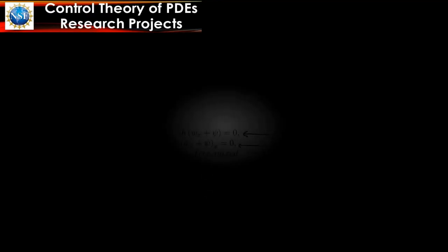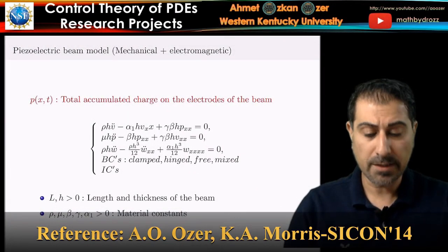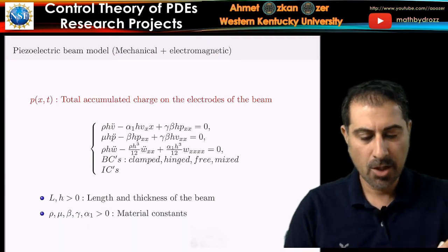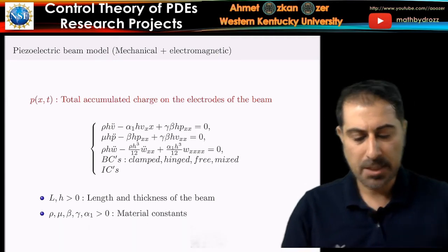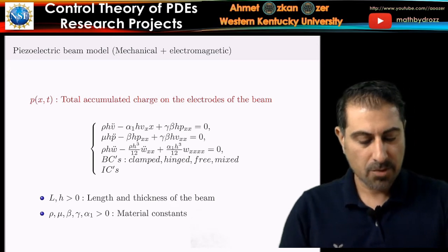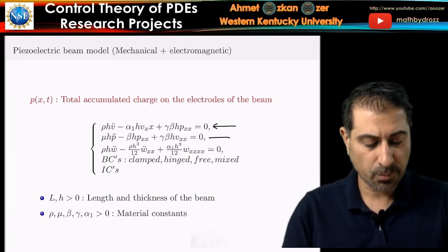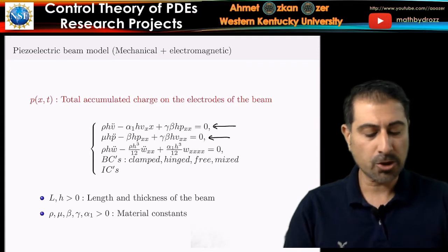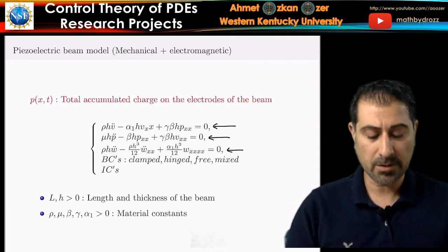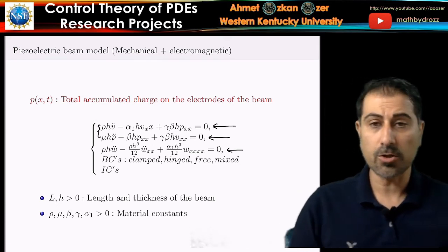The next model is the piezoelectric beam model, which blends mechanical and electromagnetic effects. Denoting P as the total accumulated charge on the electrodes, we have one equation for longitudinal vibrations, another for the total charge, and a bending equation. The bending is decoupled from the rest, while the longitudinal and charge equations are coupled.